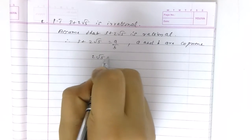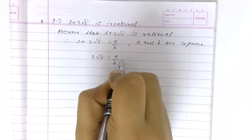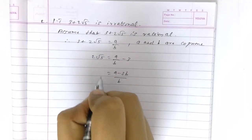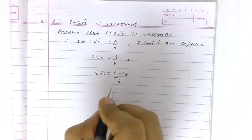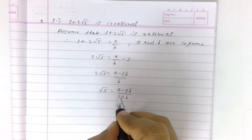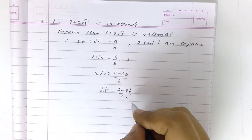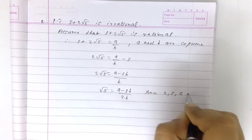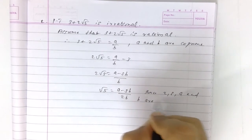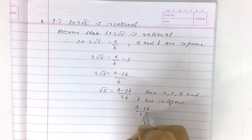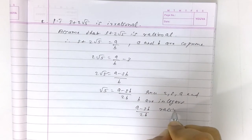Rearranging, root 5 equals A minus 3B by 2B. Since 2, 3, A, and B are integers, A minus 3B by 2B is a rational number.